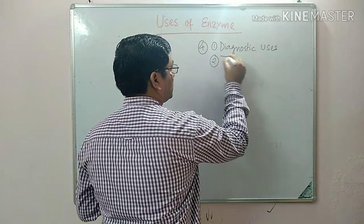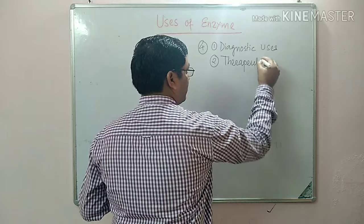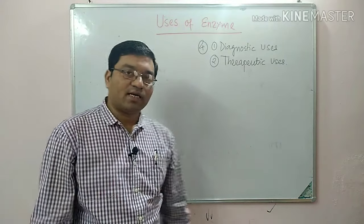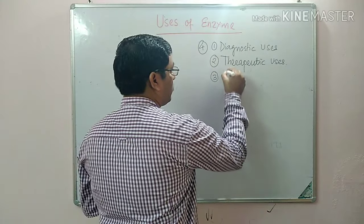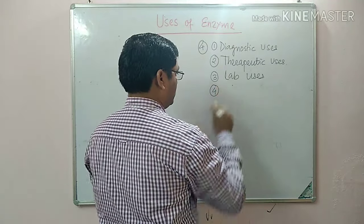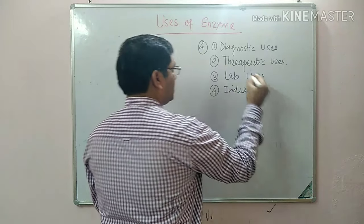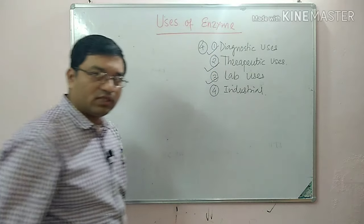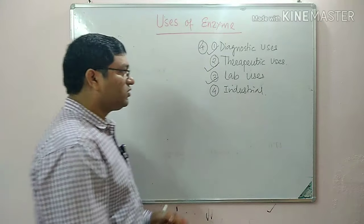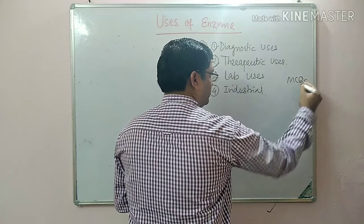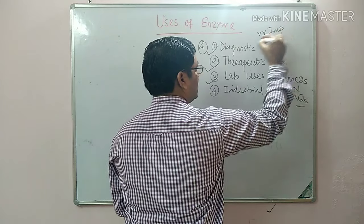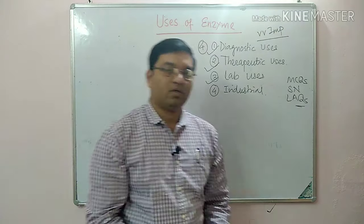The second heading is the therapeutic uses of enzymes, which is an important short note or part of a long-answer question. The third is laboratory uses of enzymes, and the fourth is industrial uses. These topics — diagnostic, therapeutic, and laboratory uses — are important for university examinations, MCQs, short notes, and long-answer questions. This is a very important topic in biochemistry and must be read.